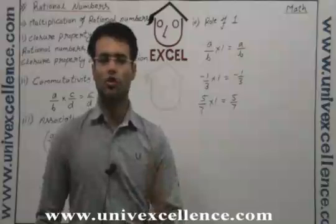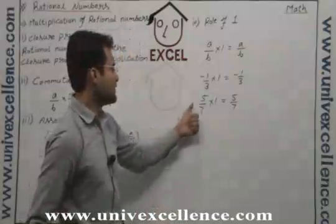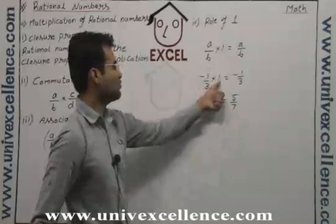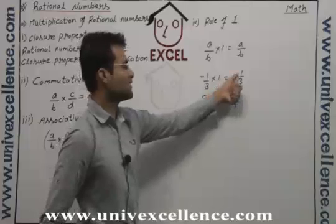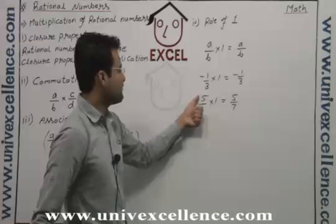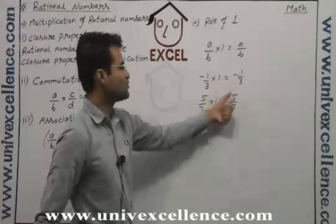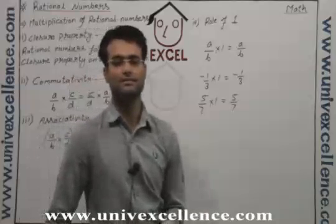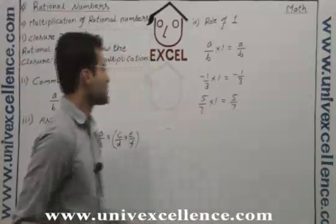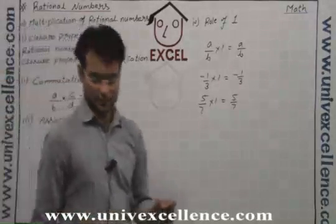So if a number — whatever it is, like natural, whole, or rational — you multiply it with 1, you get the same thing again. Minus 1 by 3 into 1 equals minus 1 by 3, and 5 by 7 into 1 equals 5 by 7. So this is a very simple thing — the multiplication of 1 is very simple.